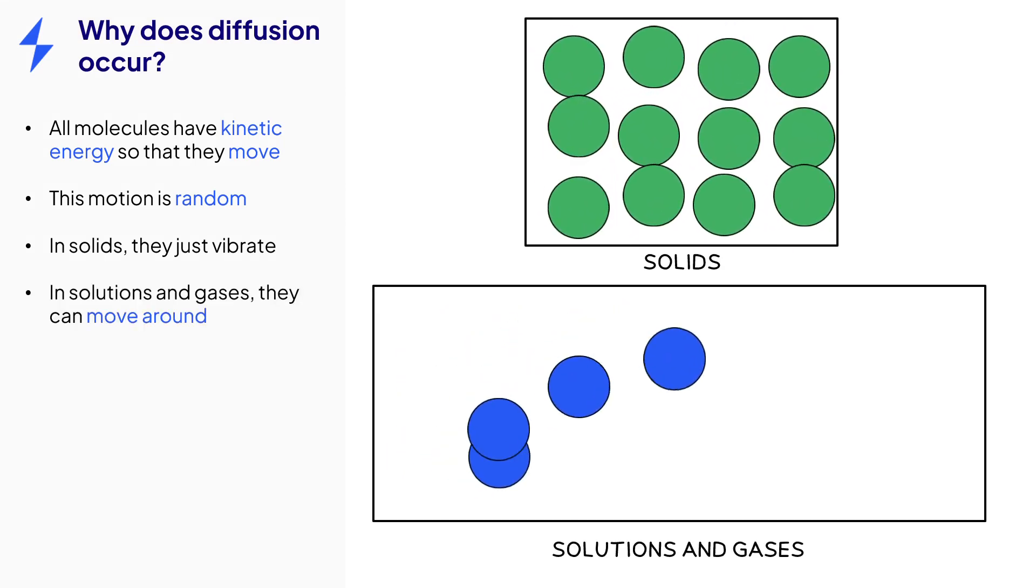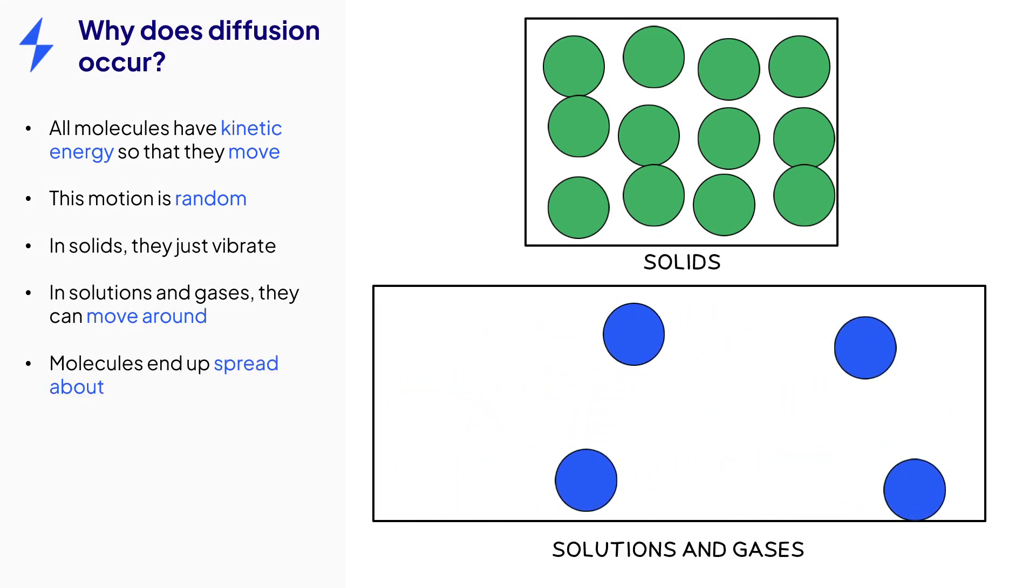In solutions and gases, the molecules are far enough apart that they can move around due to the kinetic energy they possess. This causes them to spread out from each other, as seen here, until they are evenly distributed in the available space. This is diffusion.